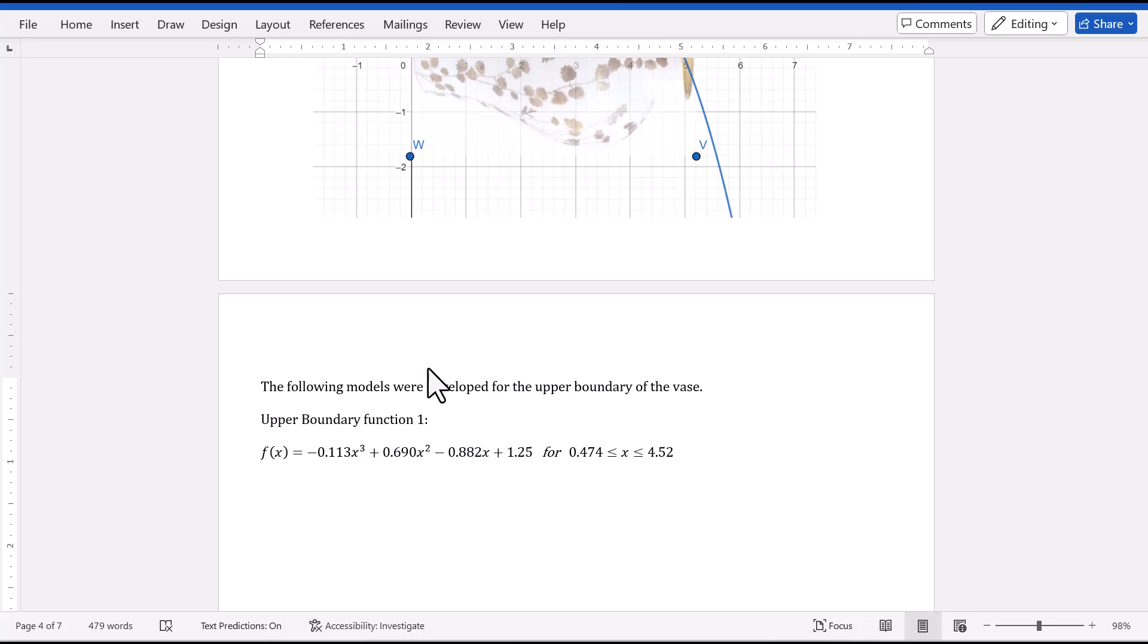Now we found the upper boundary function. F of X equals this for X greater than or equal to 0.474 less than or equal to 4.52. Remember, write down the domain for this function.